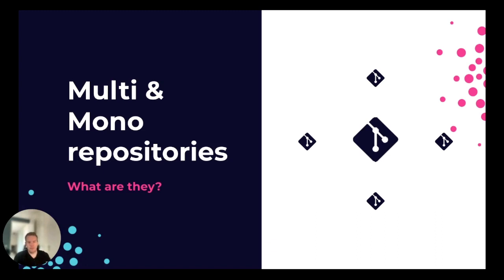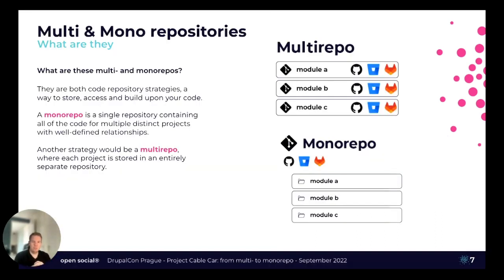So with that context in mind, let's look at multi and mono repositories — what are they? Both mono and multi repositories have one thing in common: they are a strategy to host and maintain your code base. A mono repository uses a single repository to host all of the code for multiple projects. A multi repository has those projects in entirely separate repositories, whether that's Bitbucket, GitLab, or GitHub. At first glance the difference might not feel like a big deal, but the decision will very likely have quite the impact on your development workflow.